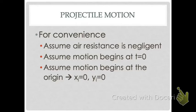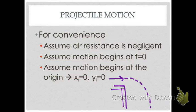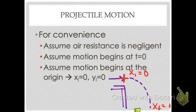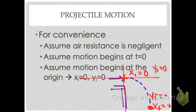For example, if an object rolls off a table, instead of setting the origin at the ground where it lands, we always set the origin where the motion starts — at the edge of the table. So my horizontal initial position XI would be zero, and XF would be some positive number because it moved forward. My Y initial would be zero, but Y final would be some negative number because it ends up below where it started — that coordinate would be positive X, negative Y.